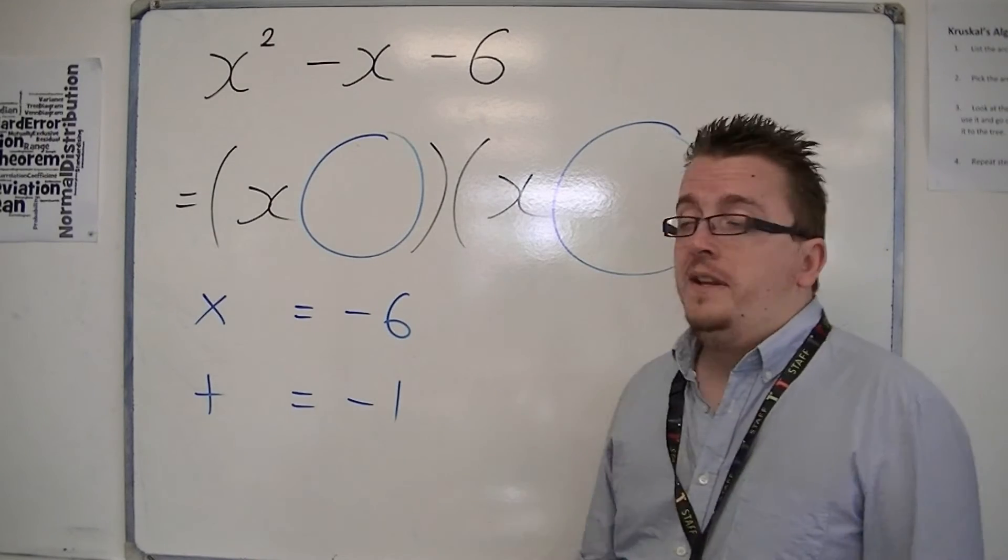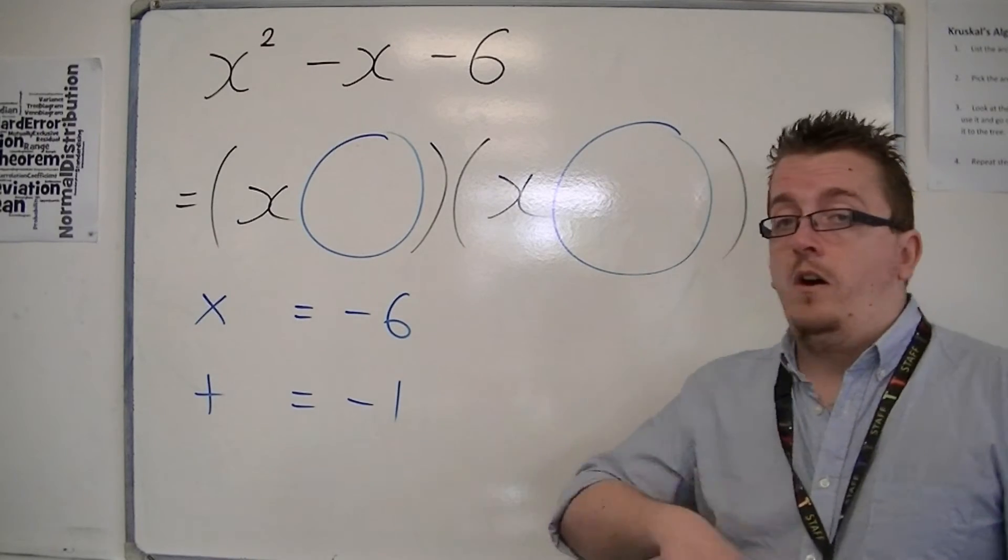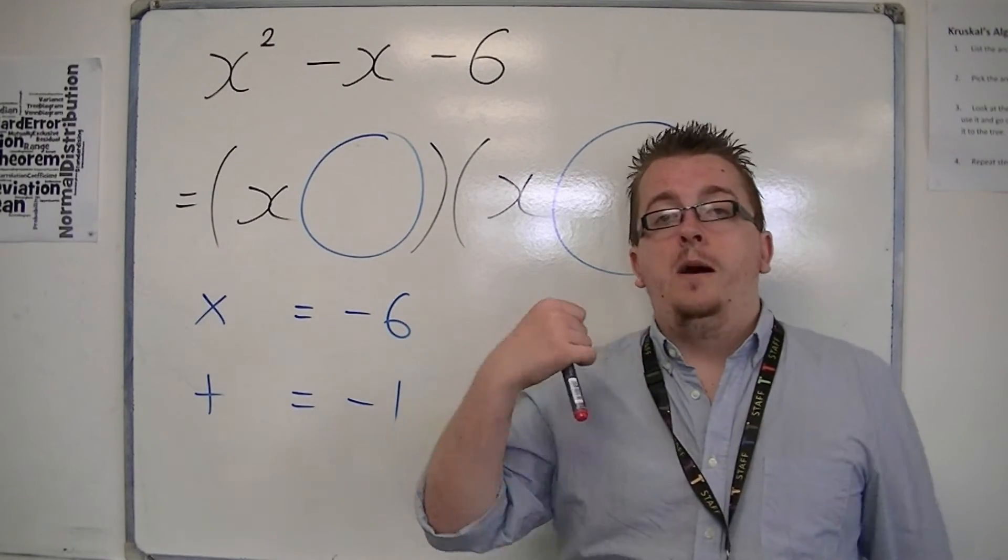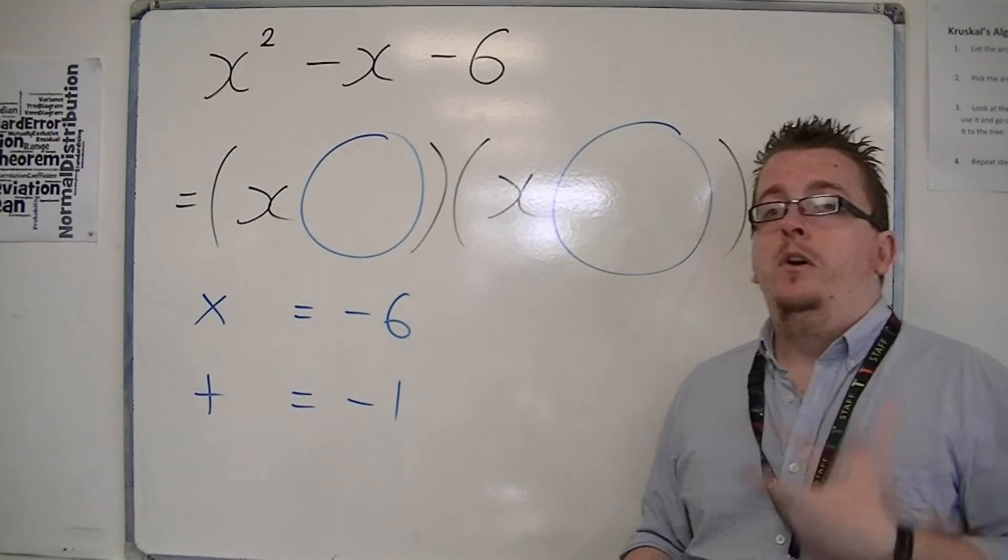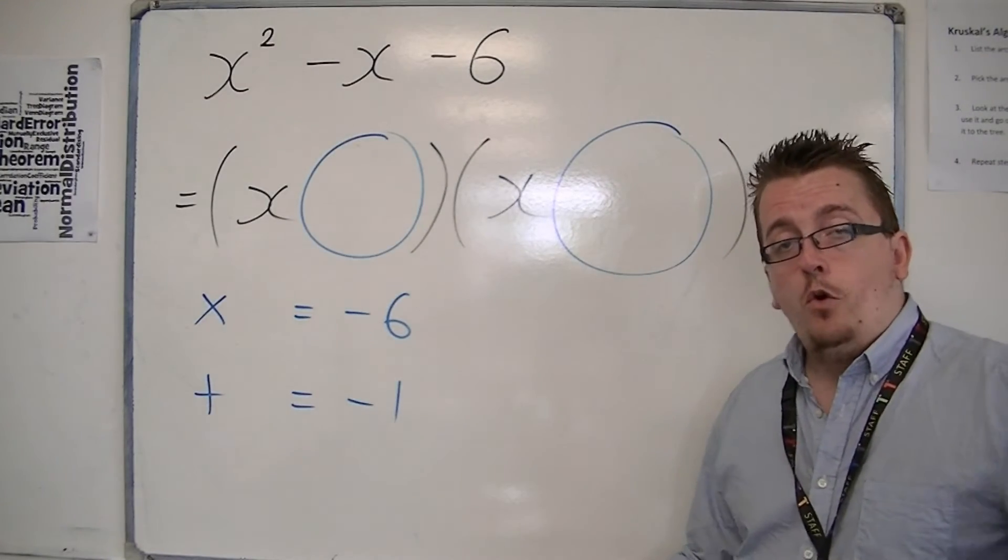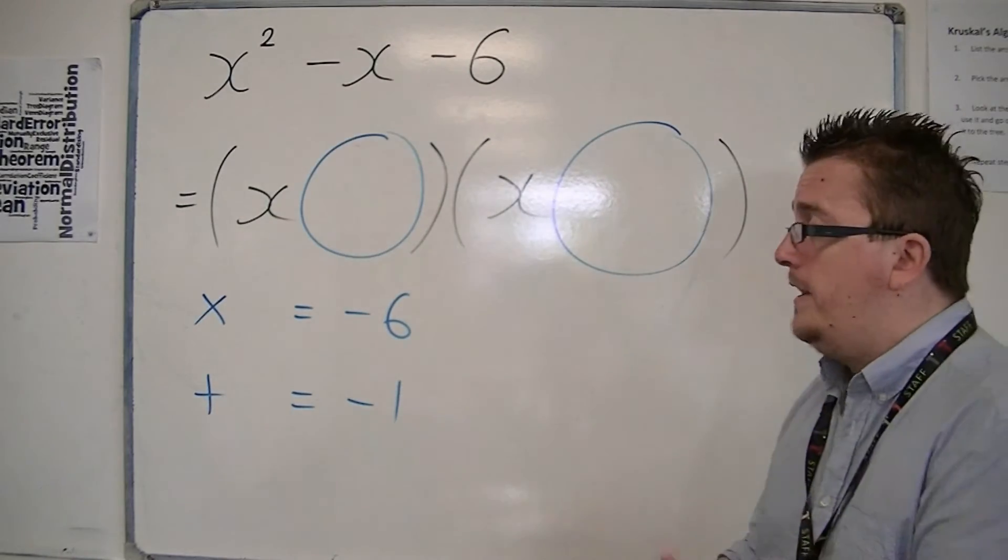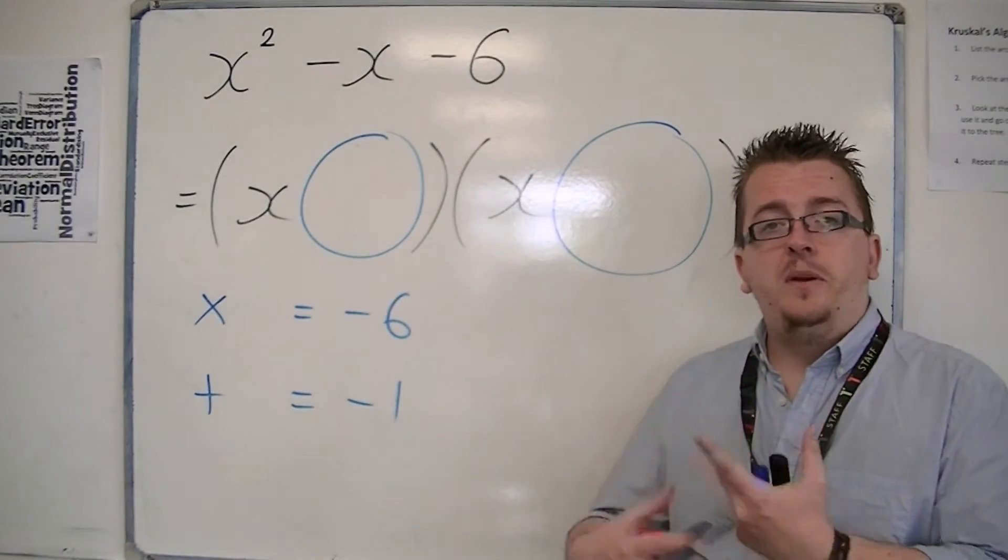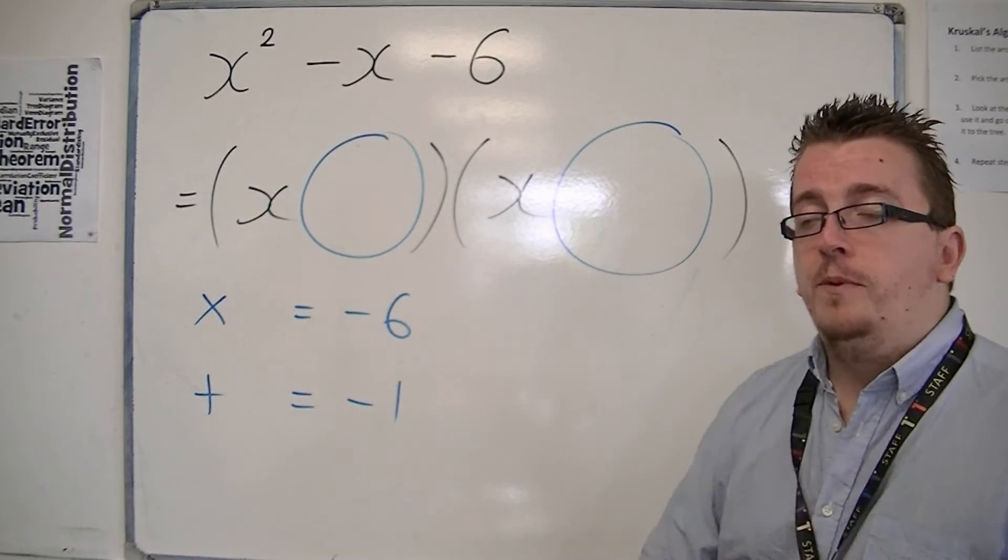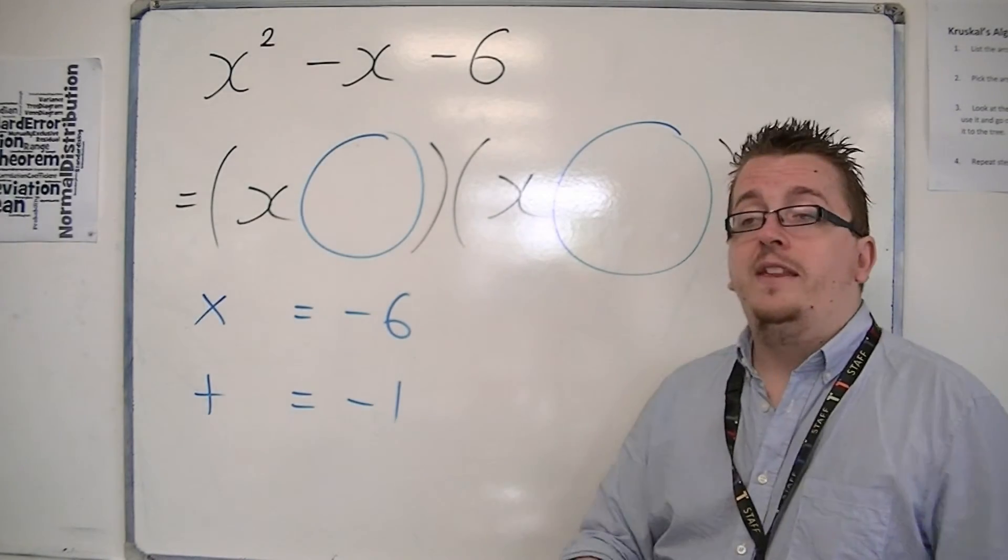So numbers that multiply together to make minus 6 are 1 and minus 6, minus 1 and 6, 2 and minus 3, or minus 2 and 3. And it's really just combining those numbers together and getting your mental arithmetic good to make sure that when they add together, they make minus 1.